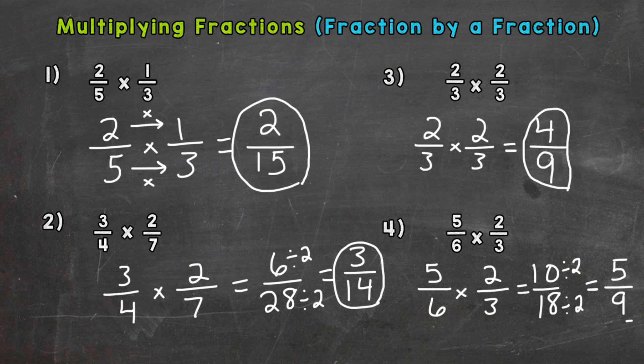Just to recap: in order to multiply fractions correctly, you need to multiply your numerator by numerator straight across the top, and denominator by denominator straight across the bottom. Once you have that done, see if your answer can be simplified or broken down. And there you have it—you can multiply fractions by a fraction.